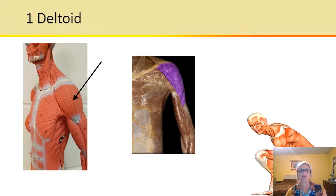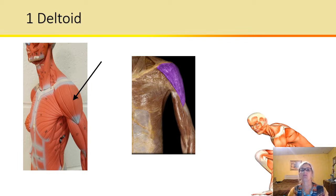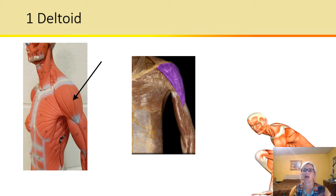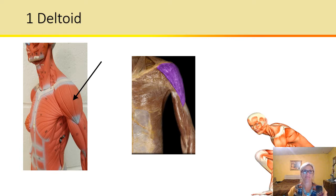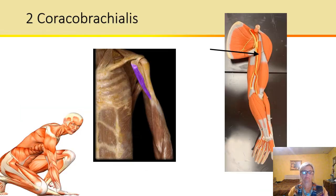All right, so next we have the deltoid. You might be familiar with this one. This is a triangle-like group of muscles and it abducts — removes, pulls away — the arm. The anterior fibers flex and medially rotate the arm toward the midline of the body. The posterior fibers can extend and laterally rotate the arm.